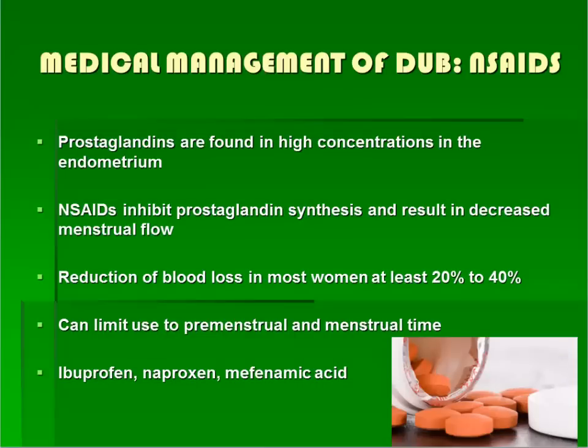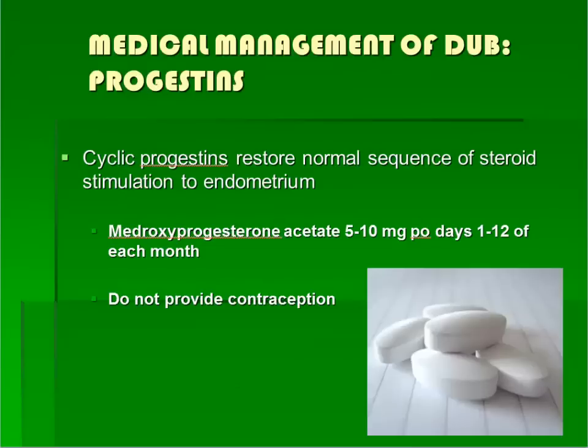NSAIDs are helpful because they inhibit prostaglandin synthesis, a factor in heavy bleeding. Synthetic progesterone, known as progestins, can be used during part of the month in a cyclic fashion or continuously throughout the month. If used in a cyclic fashion for the first 10 days of each month, treatment with a progestin simulates the cyclic exposure to progesterone that would occur if the patient were ovulating. Withdrawal of the progestin after 10 days leads to a regular limited menstrual flow. However, cyclic progestins do not provide contraception.